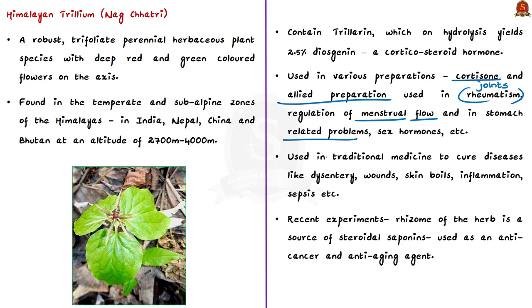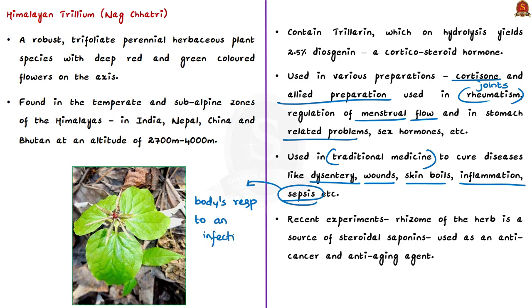The Himalayan trillium has also been used in traditional medicine to cure diseases like dysentery, wounds, skin boils, inflammation, and sepsis — a life-threatening condition caused by the body's response to infection, where the body's response to chemicals released into the bloodstream goes out of balance and leads to organ system damage. Because of these effective medicinal properties, the demand for this herb is high in international markets and it is often smuggled out to markets in Punjab. In recent years it has become one of the most traded commercial plants of the Himalayan region.